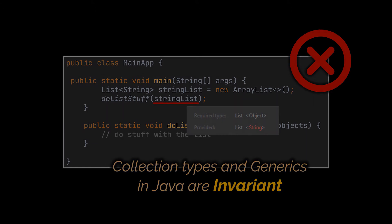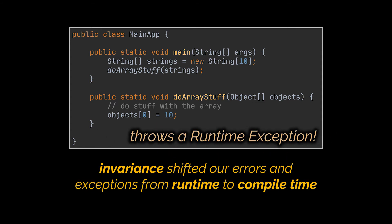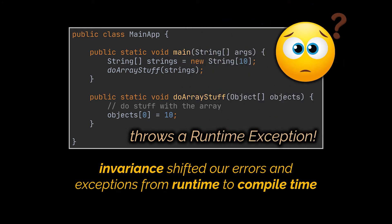Before we tackle what invariance means, the error we got is actually a good thing. Imagine we stored integers in the array of strings passed to a method expecting an array of objects — the code would compile with no errors but we'd get a runtime exception. Making collections and generics invariant shifts errors from runtime to compile time, and that is one huge benefit.